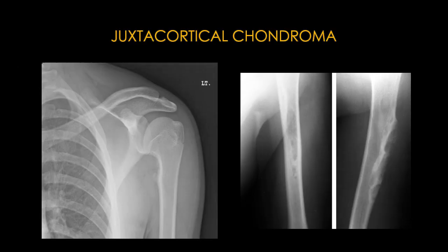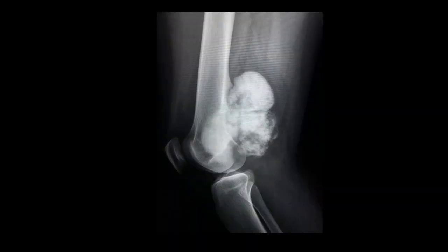The juxtacortical chondroma is classically tested because of the term used to describe scalloping of the cortex from a surface lesion, which is called saucerization. Endosteal scalloping describes a growing medullary cavity lesion eroding the inner cortex; saucerization describes scalloping of the cortex by a lesion on the surface. Saucerization is very classic in juxtacortical chondroma — a chondroid lesion arising from the surface of the bone. Note that the cortex is intact and the medullary cavity is normal, and we can see small chondroid matrix within the lesion.